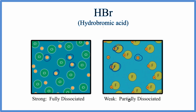So the weak acid is partially dissociated, while a strong acid will be fully dissociated. For HBr — hydrobromic acid — it is a strong acid and all the ions will fully dissociate.